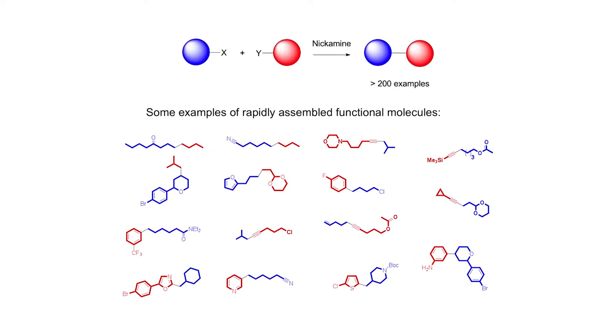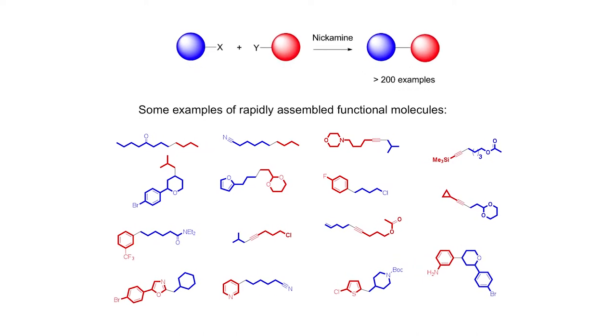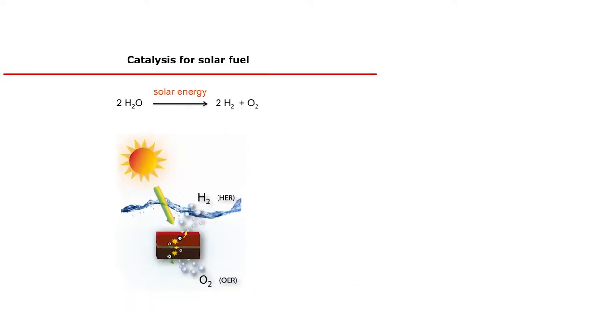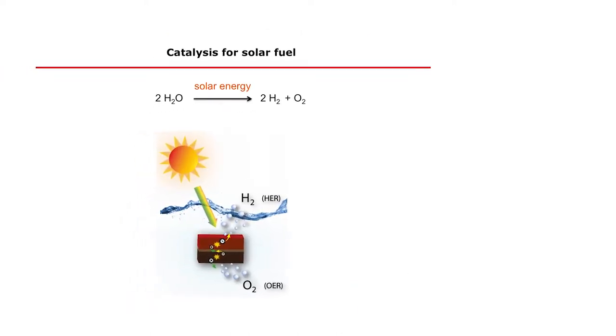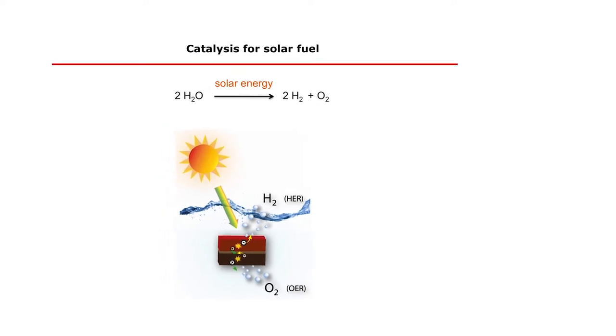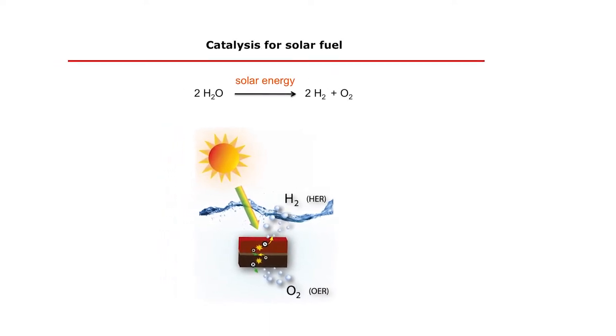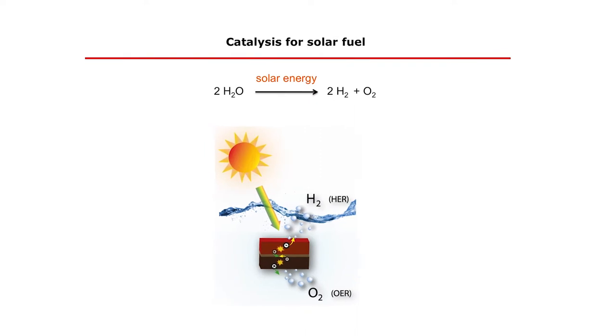In recent years, our research group has spent a significant amount of effort in developing catalysis for the production of solar fuels. The idea is to use solar energy to split water to make hydrogen and oxygen and use them as fuels for transportation and other stationary use.